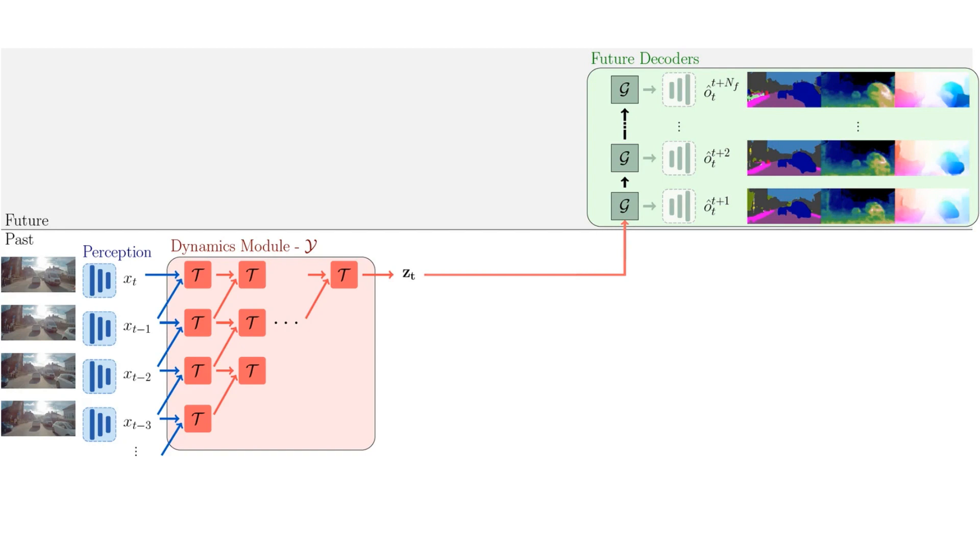To account for this, we introduce a novel method to model the future in a probabilistic way with a conditional variational approach. Our network additionally parameterizes two probability distributions, the present and the future distribution.